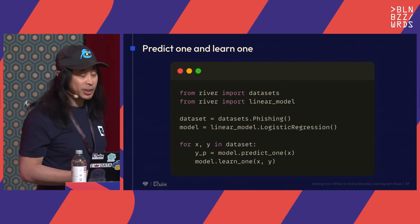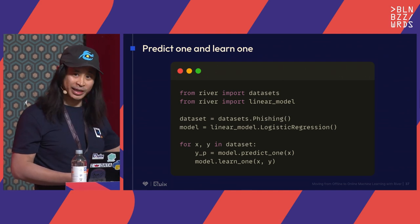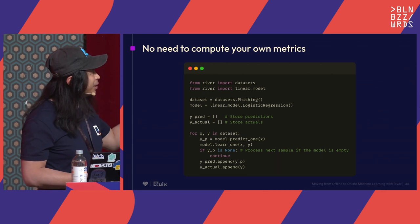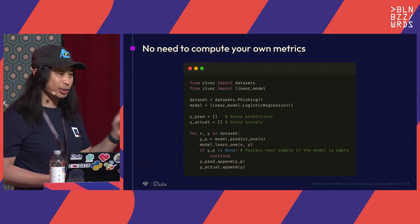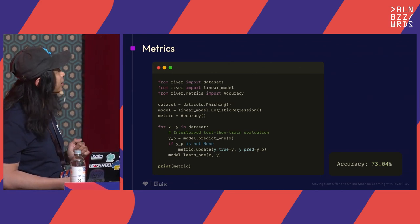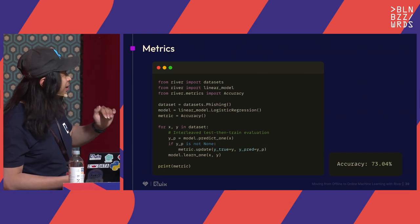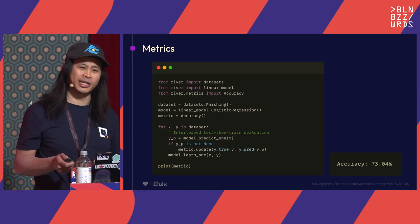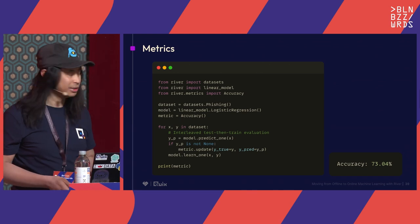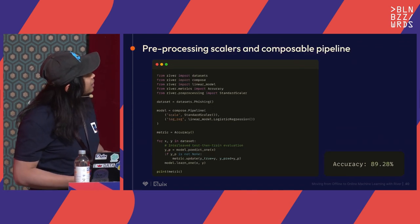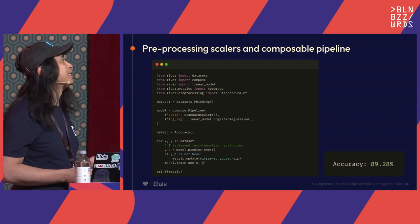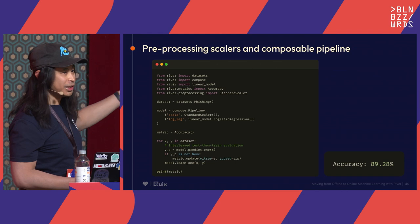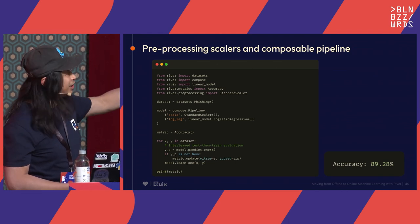The API is really reminiscent of scikit-learn. You can predict, then learn when you have the label. For metrics, I'm using an accuracy metric — basically the percentage of exact matches. When you get an observation, you determine if you want to learn from it or predict with it. You also have preprocessing scalers; here I'm using a standard scaler in a pipeline so that every new observation gets scaled before being passed to a logistic regression model.